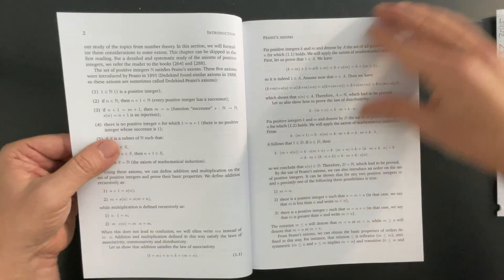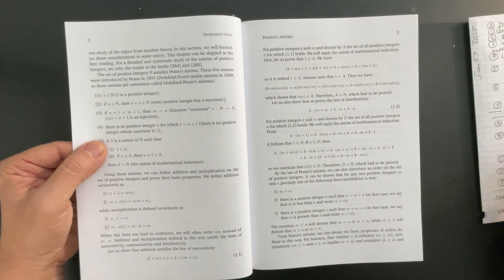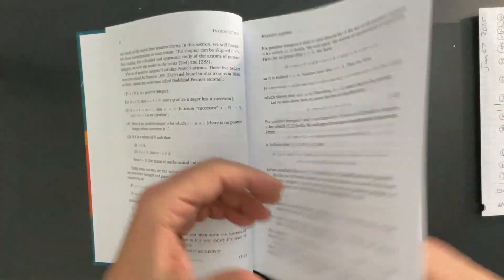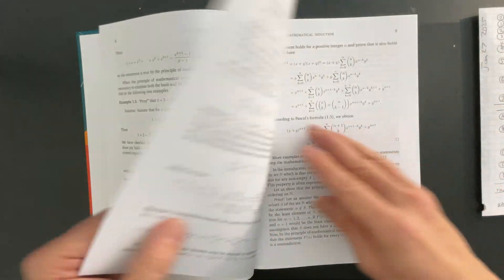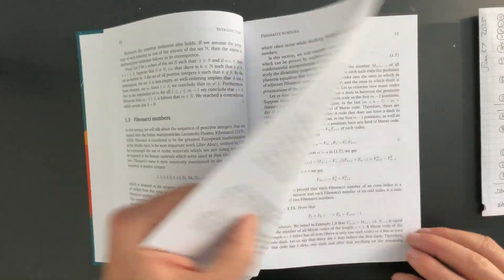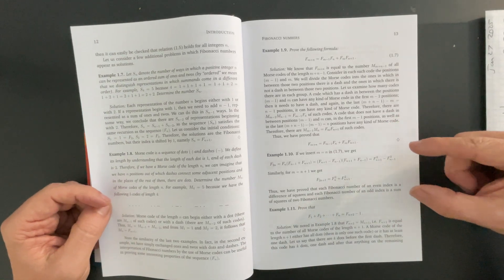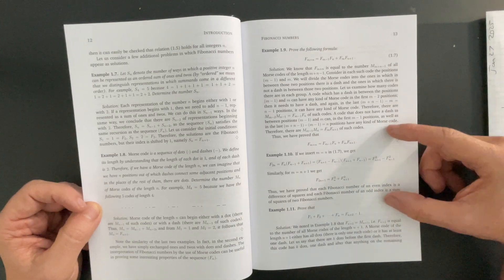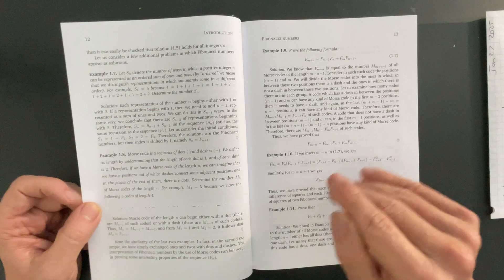I'm going to page through some parts of the book. Again, Peano's axioms. Of course, mathematical induction, which you would see in an intro book. Then Fibonacci numbers. And, this content is more thorough than I've seen in Rosen. Some of these examples and some of these proofs are actually problems in Rosen.